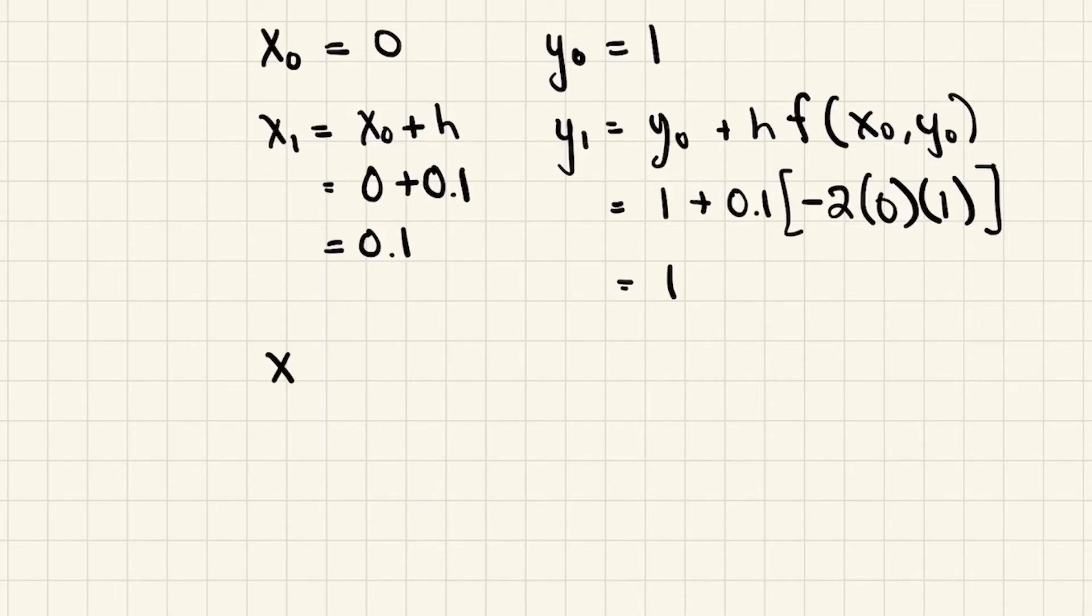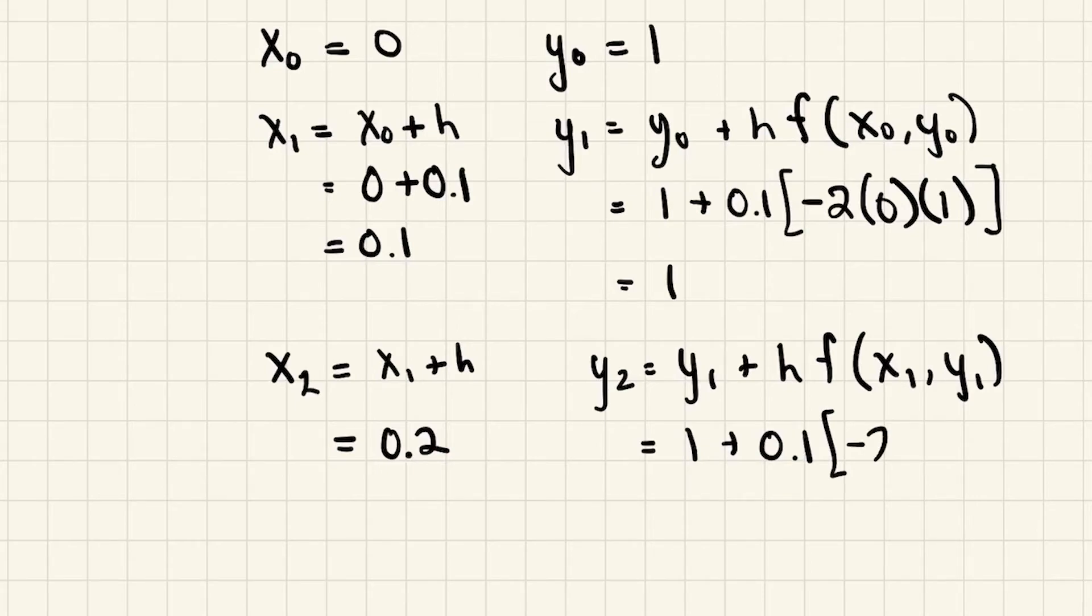Let's find x₂ now. That's simply going to be x₁ + h. y₂ is going to be y₁ + h times f(x₁, y₁). So y₁ is 1, h is 0.1, and we have -2 times x₁, which is 0.1, y₁, which is 1. So I did this calculation and got y₂ is 0.98.